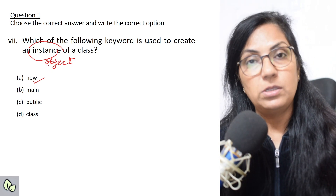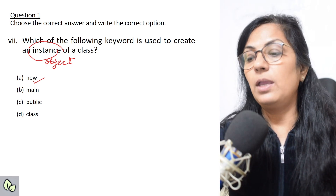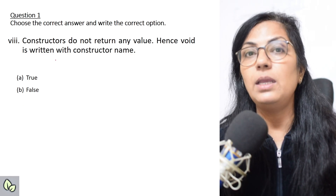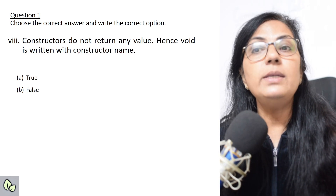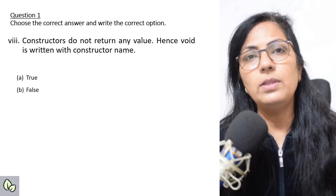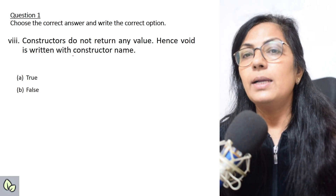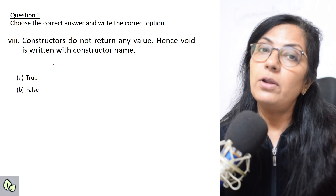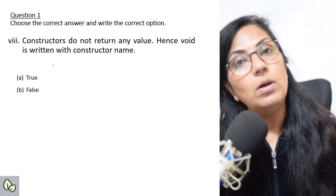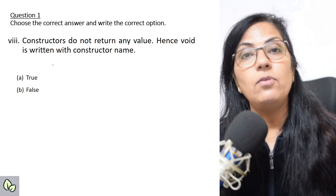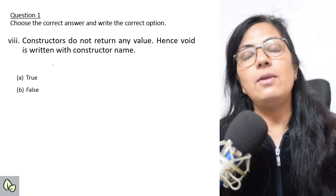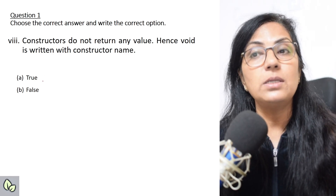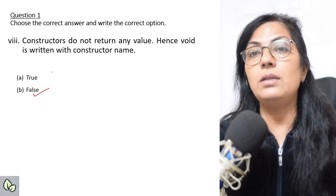Next question: constructors do not return any value. We know constructors never ever return any value. Do we write void before the constructor name? No. A constructor is a function that does not have any return value — not even void. For all other functions that don't return a value, void is always given. But the constructor is the only function which never returns any value, not even void. So 'void is written with constructor name' is false.